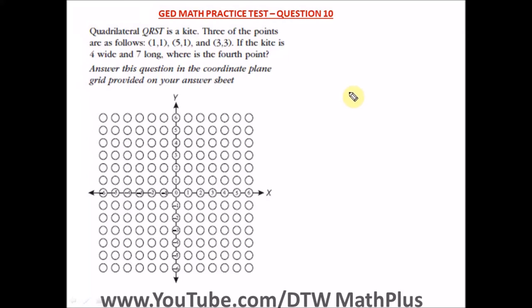Question 10 of the GED Math practice test, Part 1 — the part with a calculator. It says a quadrilateral QRST is a kite. Three of the points are given. If the kite is four wide and seven long, where is the fourth point? Answer this question in the coordinate plane provided on your answer sheet.